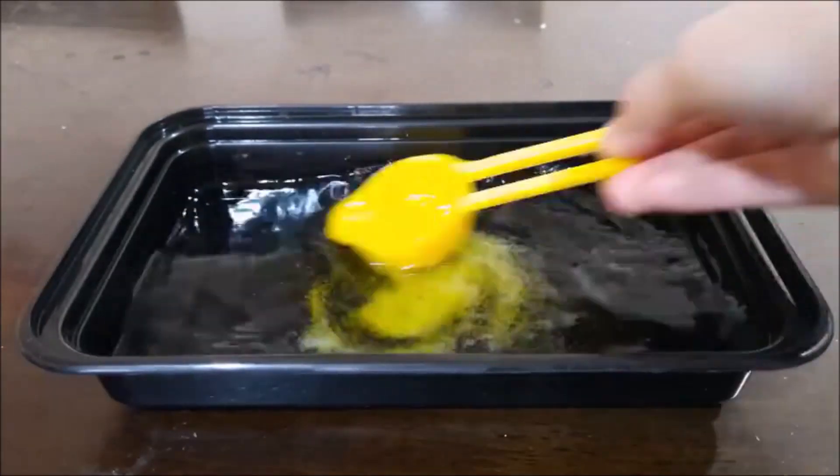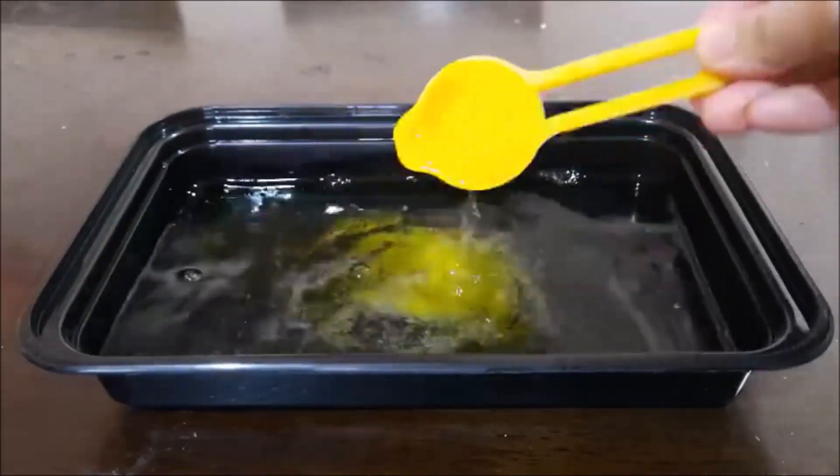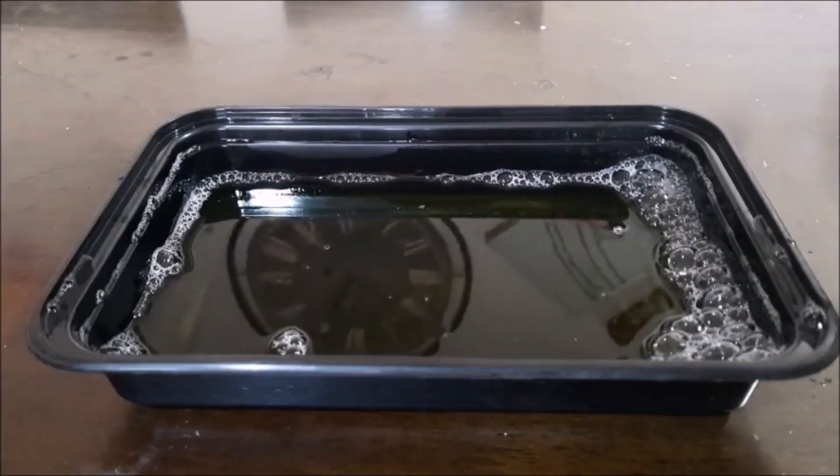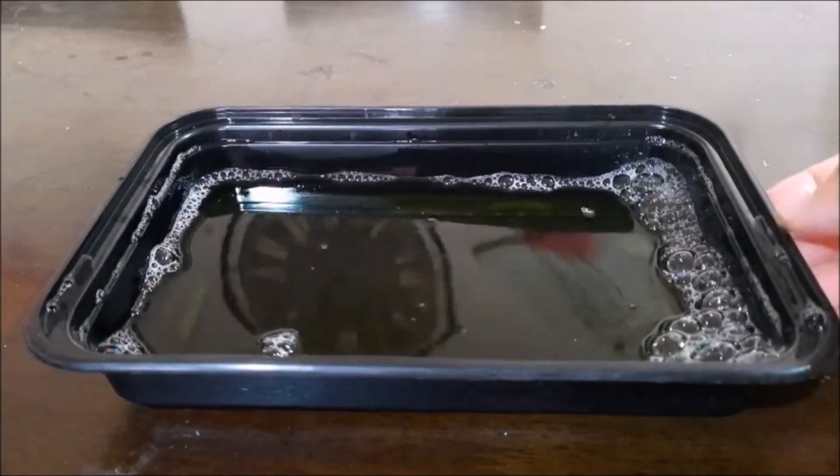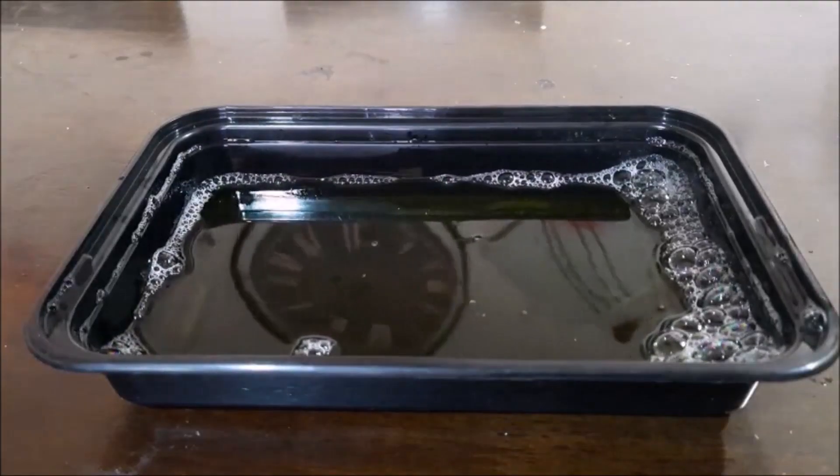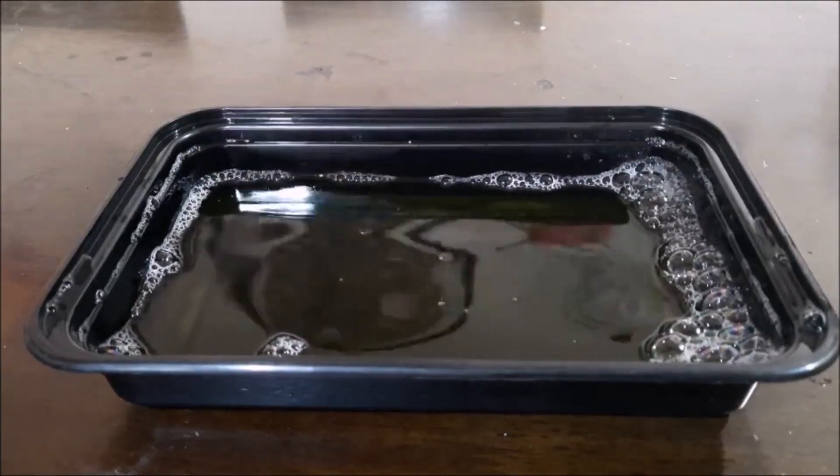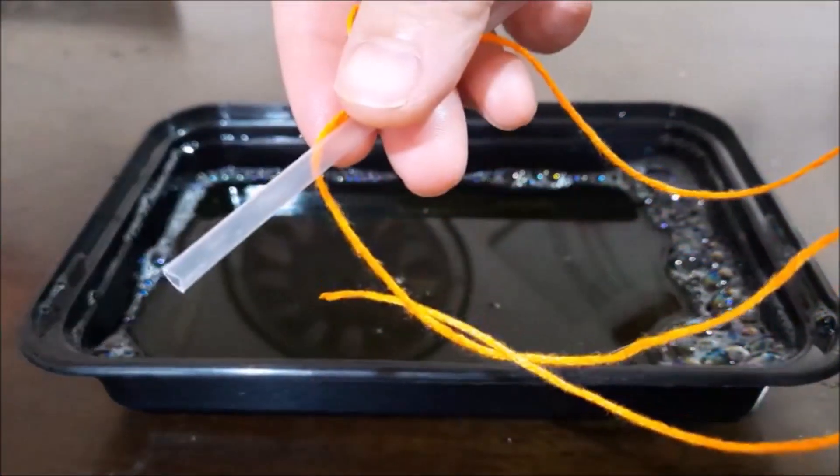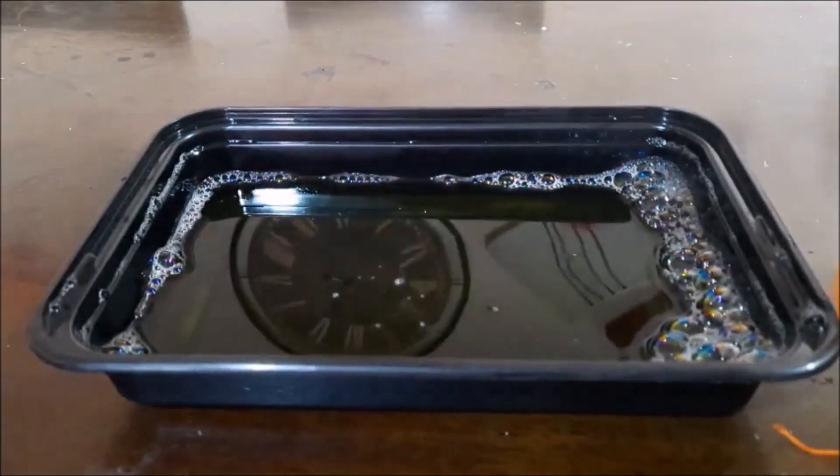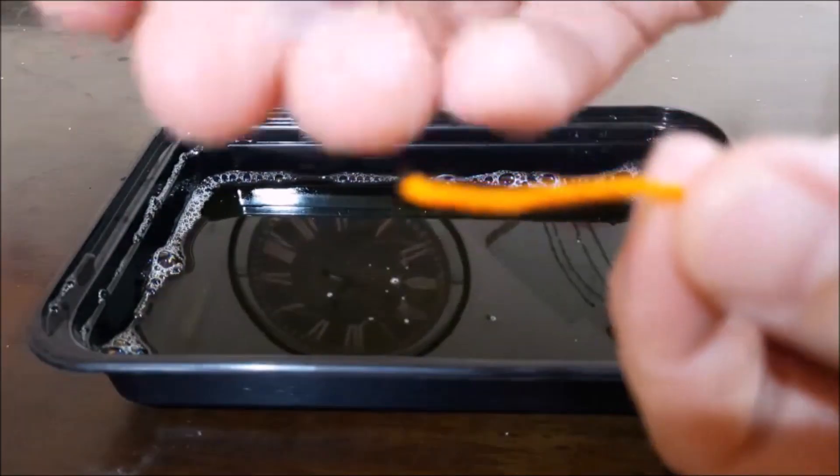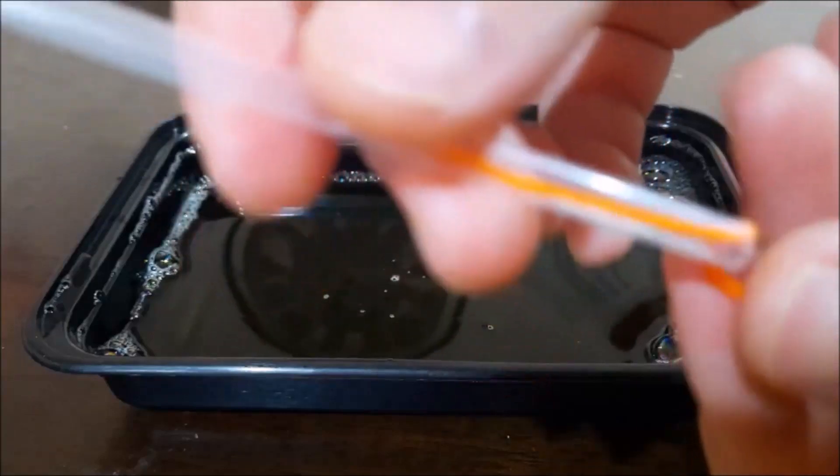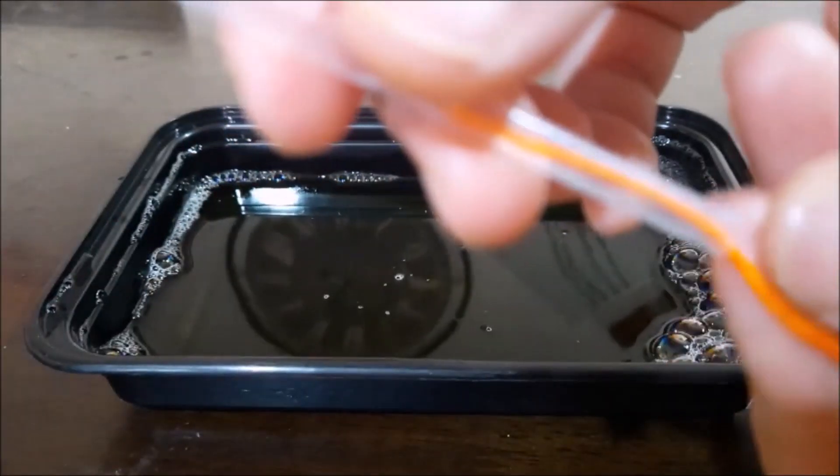And we will mix. Now that we mixed the mixture, we will now make our bubble frame. So we will put the cotton string inside the straw and tie it at the end and make a square or a rectangle.